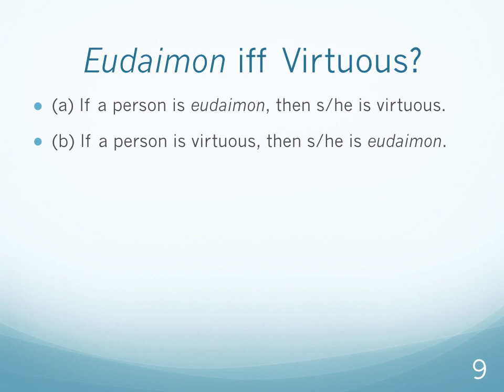Not all IFF statements are true. 'It's water if and only if it's H2O' works both ways. But 'it's a shape if and only if it's a circle' doesn't — being a shape doesn't guarantee being a circle, though a circle guarantees being a shape. Similarly, 'you're a Golden State Warriors player if and only if you're in the NBA' is false — only one direction works. Being on the Warriors guarantees being in the NBA, but being in the NBA doesn't guarantee being on the Warriors; you could be on the Bulls, Celtics, or Lakers.